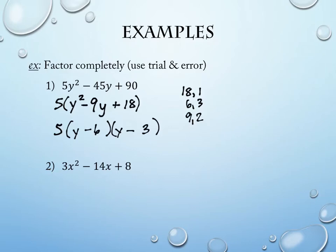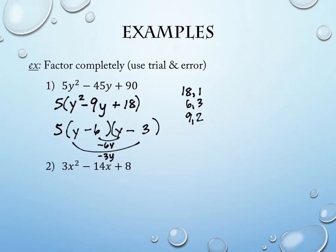If the middle term had said 19, I'd have used 18 and 1. If it had said 11, I'd have used 9 and 2. The middle term tells me which pair to pick. I'm adding them because the signs match. Negative 6 plus negative 3 would be negative 9. If the signs don't match, I'm looking to subtract the two values to give me the value I want. We'll see an example of that later. So this is our factoring, and we're done.